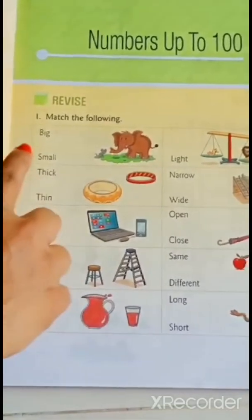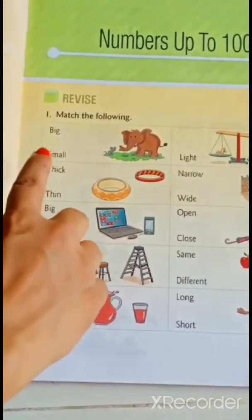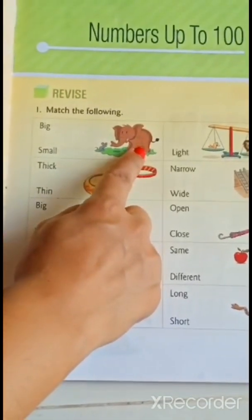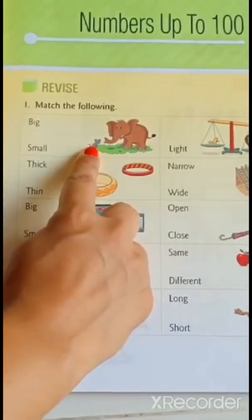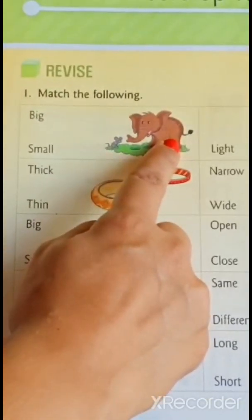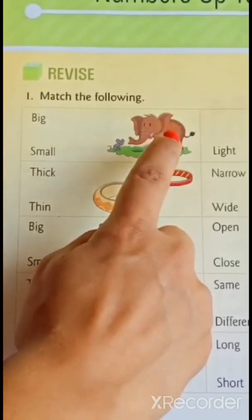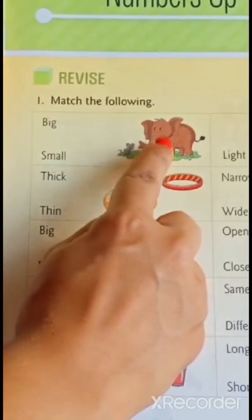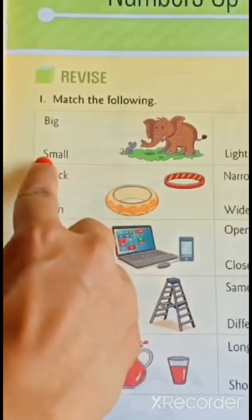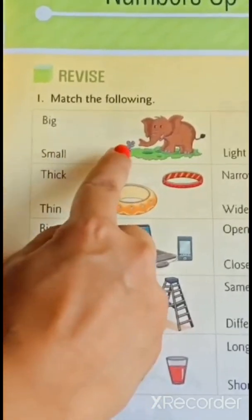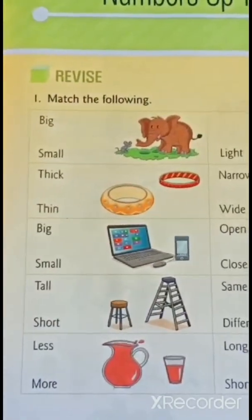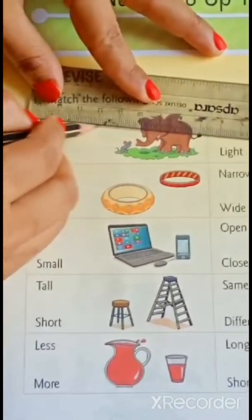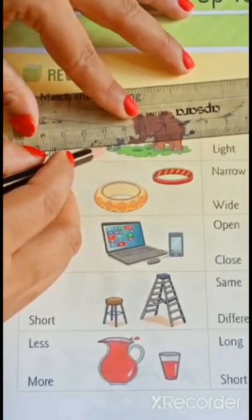First one is B-I-G big and S-M-A-Double-L small. Here, elephant is given and red is given. So, now elephant is big or red is big? Yes. Elephant. So, join B-I-G big with elephant. And red is small. So, join small with red using pencil and scale. Elephant is big. And red is small.